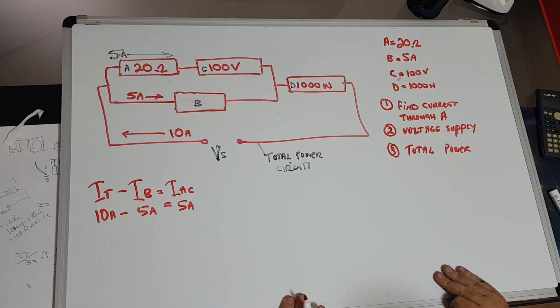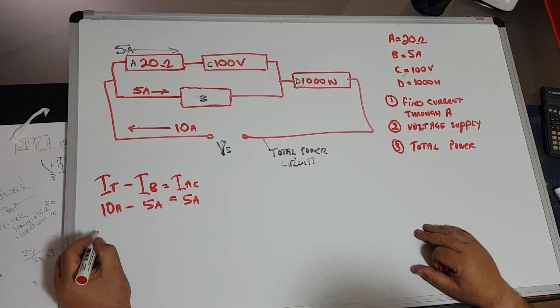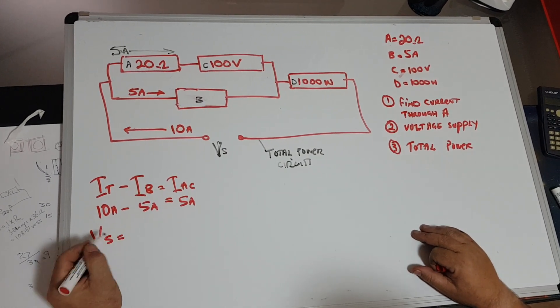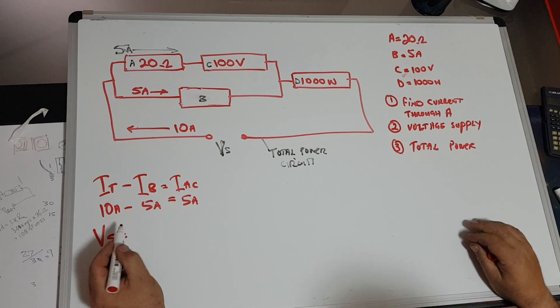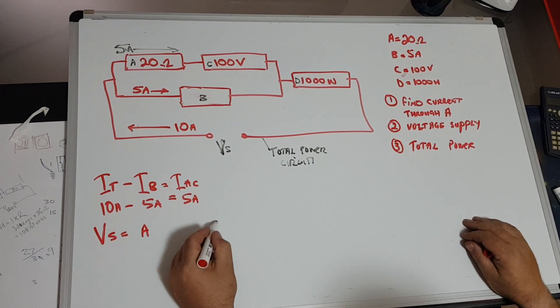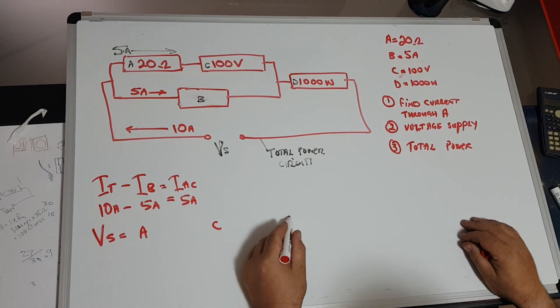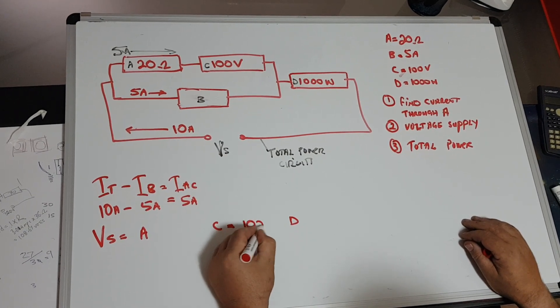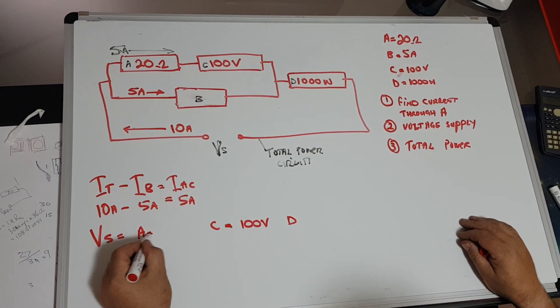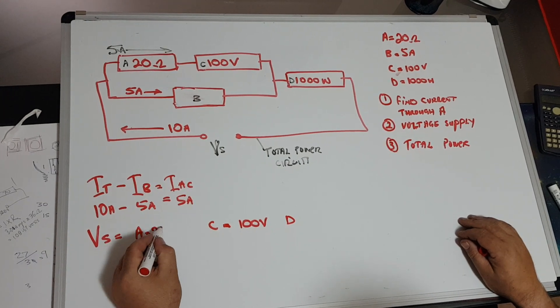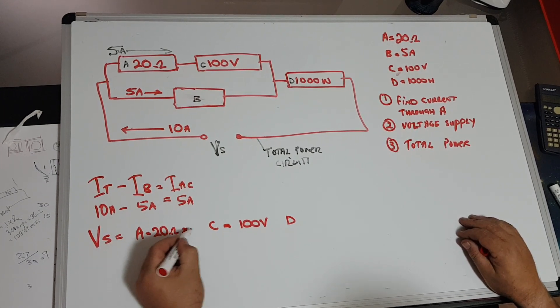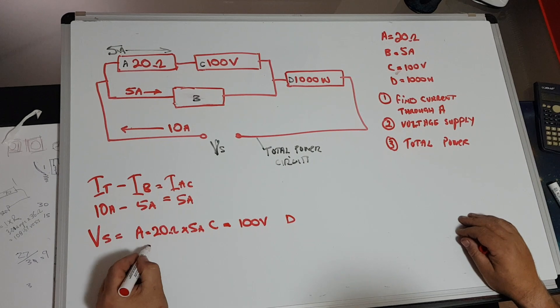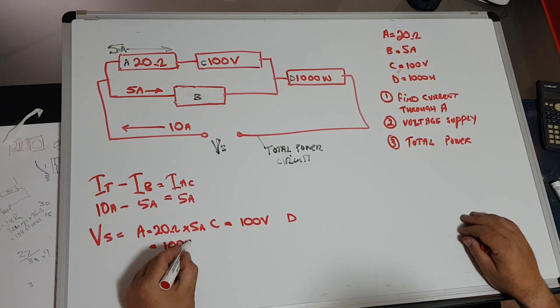Next thing I need to do is find out the voltage supply. Voltage supply will equal—we've got A, C, and D. A to C is already equal to 100 volts. A is equal to 20 ohms times 5 amps, which equals 100 volts.